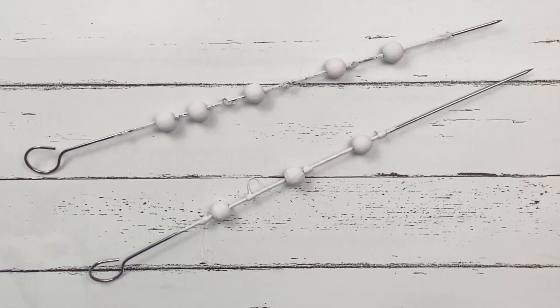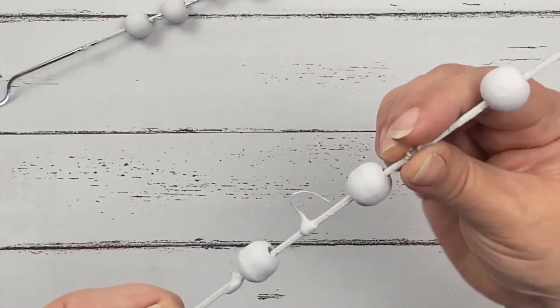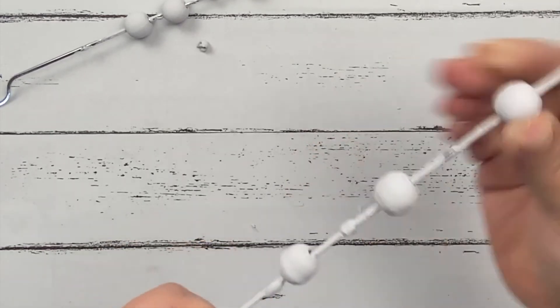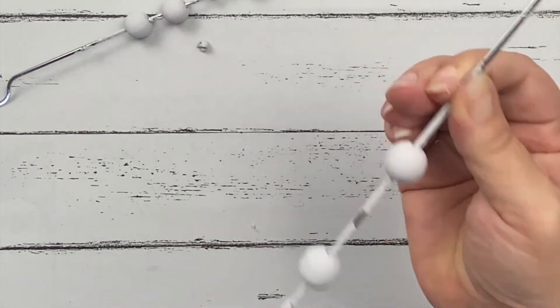Okay now we're back and the beads have dried so all we have to do is remove the glue. Just twist the glue if it's a little bit stuck and it should come off. Then just start taking your beads off.